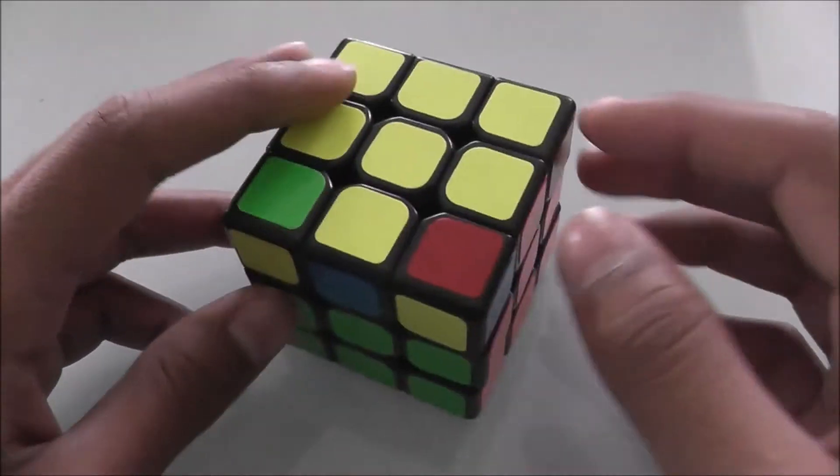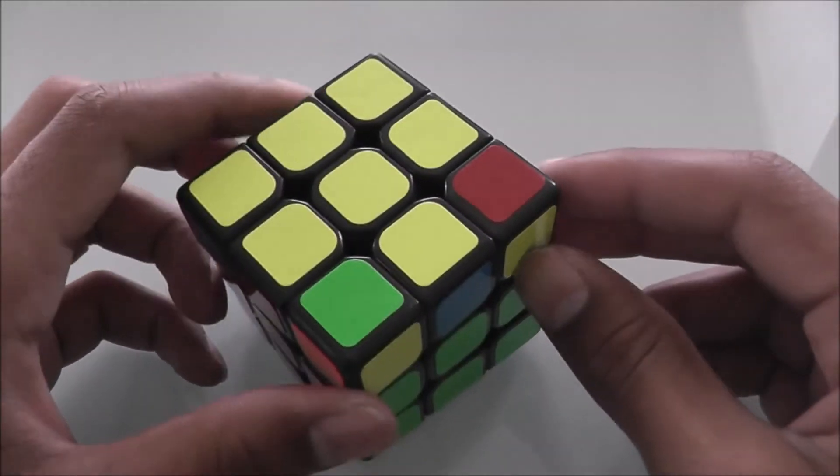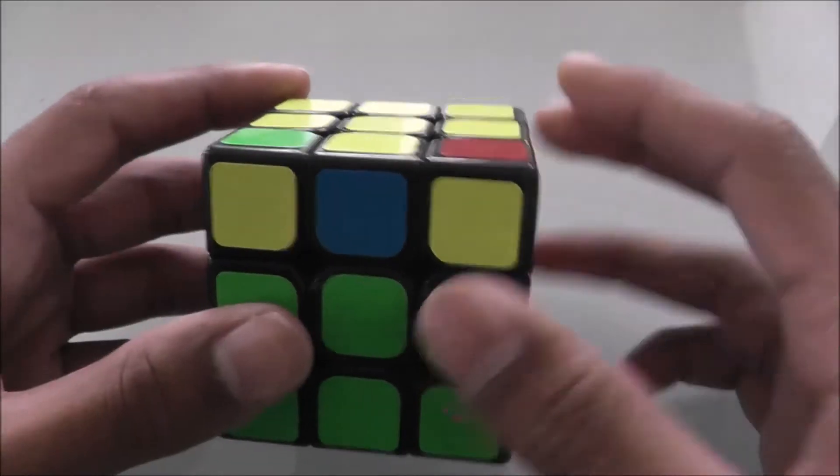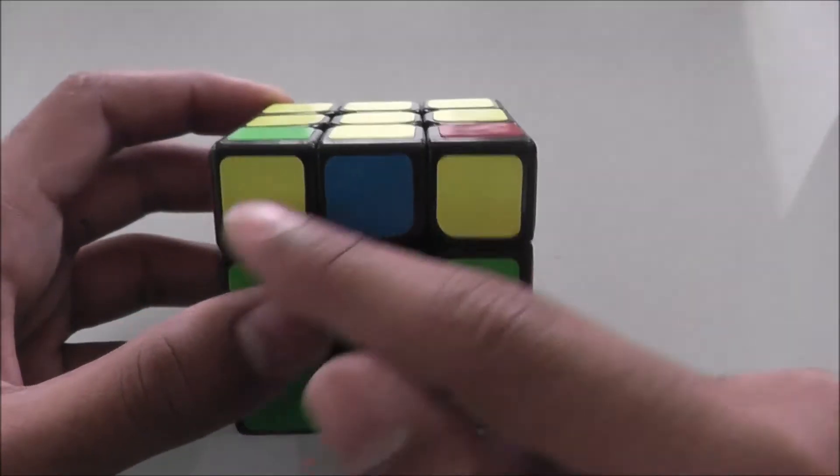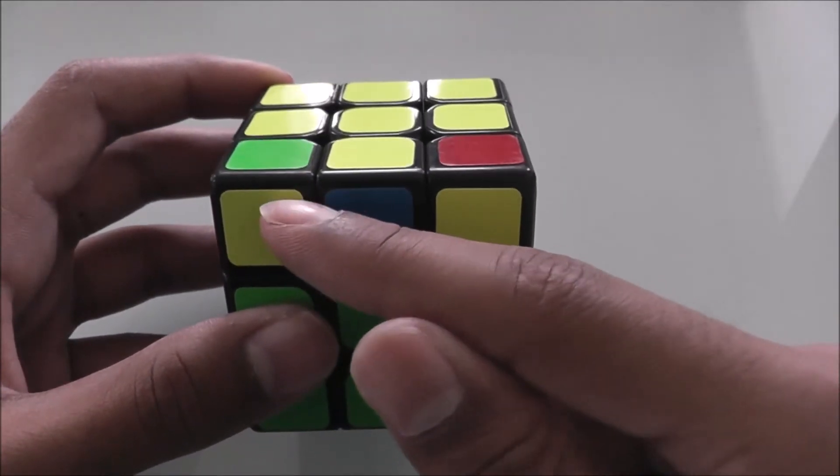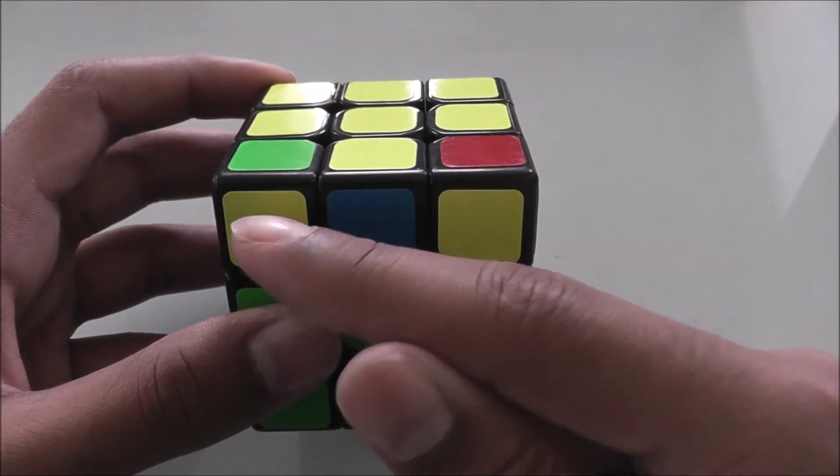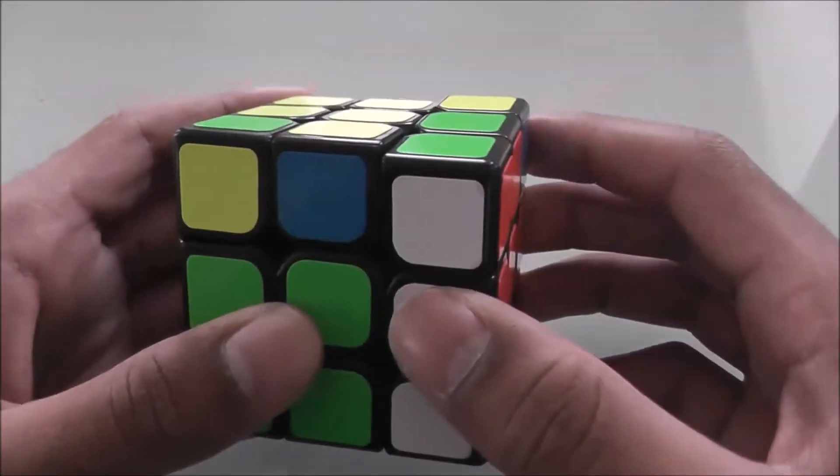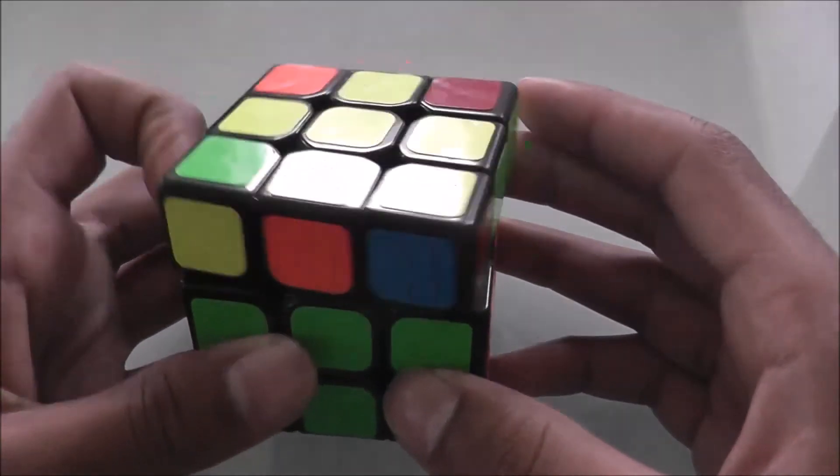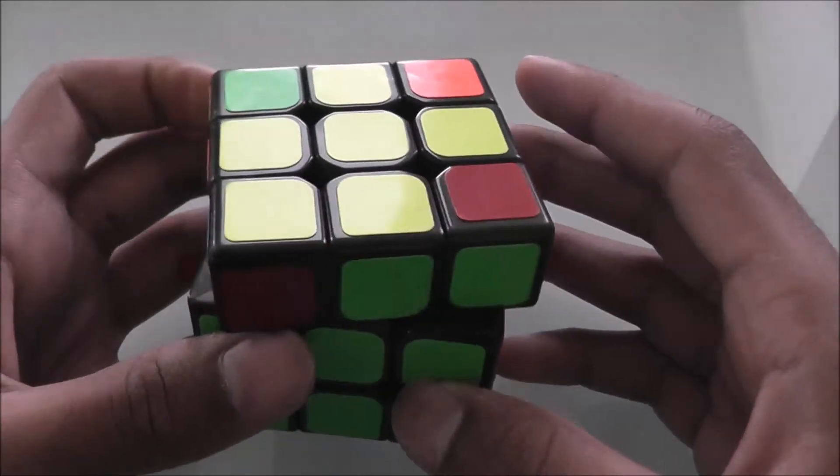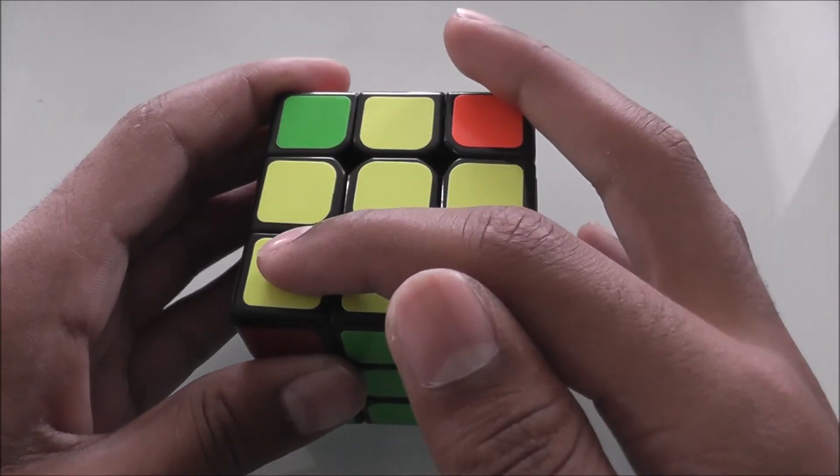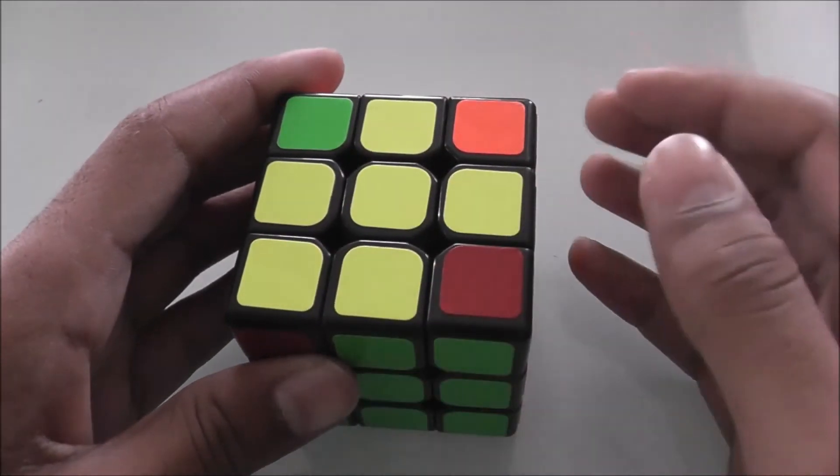If you get two unsolved, then you're going to look at the top bar right here, and you're going to hold it so that there always is one on the left. You're going to apply the Sune, which is: R U R' U R U2 R'. No matter what, if you get two unsolved, you will notice that we have just one that is solved, and that's what you want.